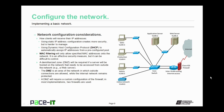If you do use DHCP, you might want to consider using MAC filtering. MAC filtering will only allow specified MAC addresses — that physical burned-in address — onto the network. It is an effective security measure, but kind of like static IP addressing, it can be difficult to control and manage, especially as the network grows.